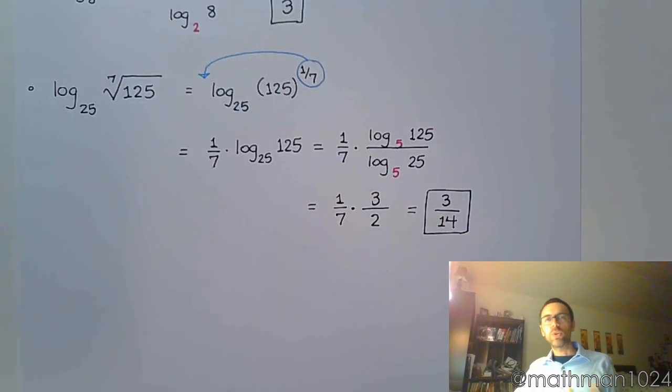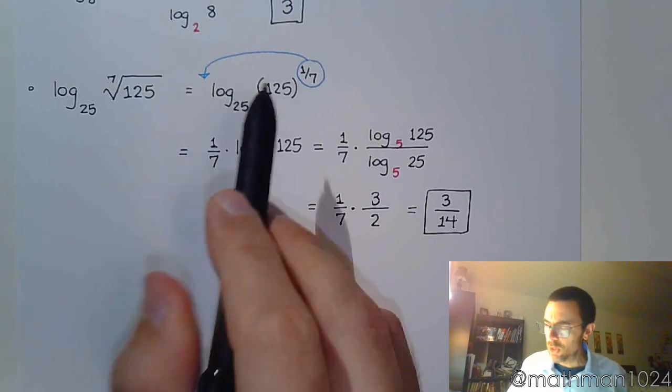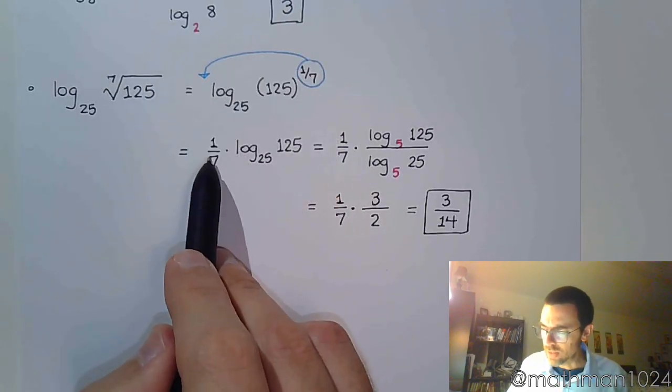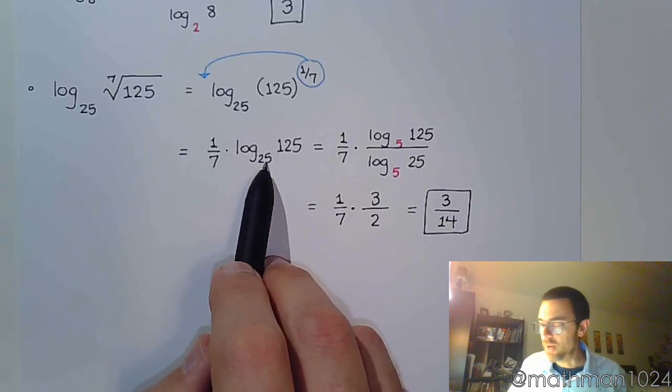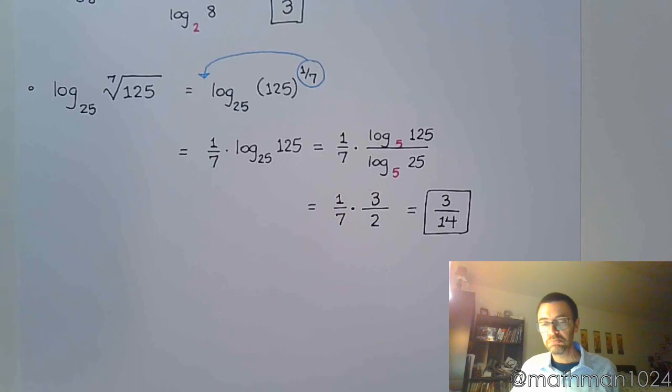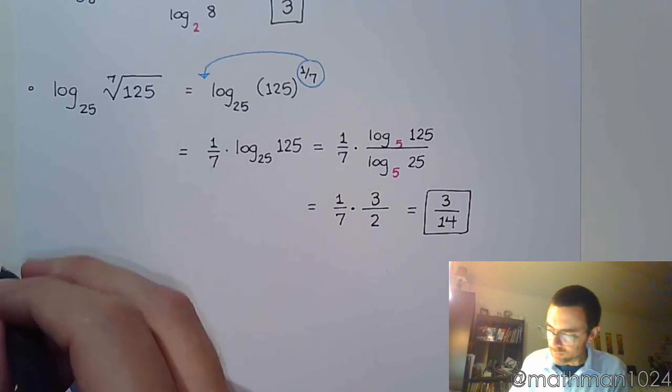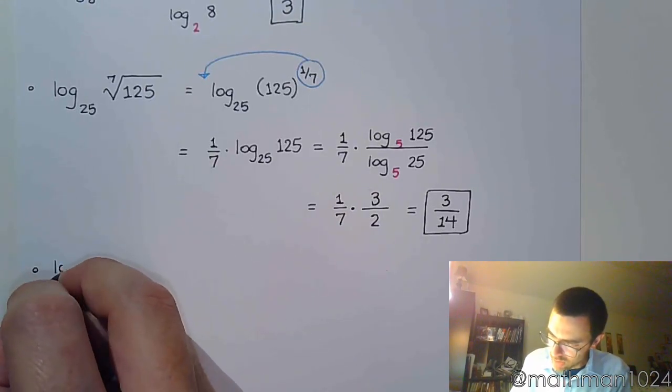Now, that's not the only way to do it. But I think that's probably the most efficient way of doing that. You don't really have to struggle with fractions and all that jazz. You bring the power out in front. You do a change of base here for log base 25 of 125. Recognizing the common base is 5. And then you're done. Alright.